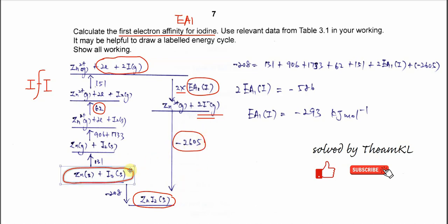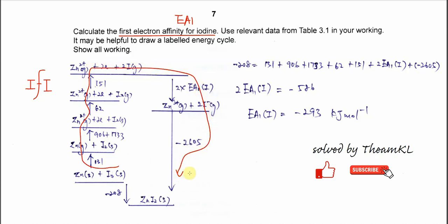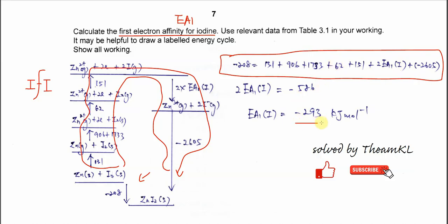What you need to do is once you construct this energy cycle, you need to sum it up. Sum up all the enthalpies all the way to here. Sum up all of this. It's equal to this one. What you need to get is the first EA of iodine. Rearrange and calculate. You get negative 293.